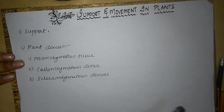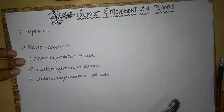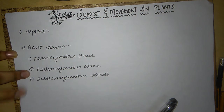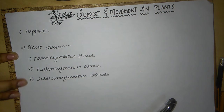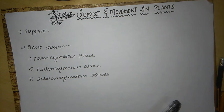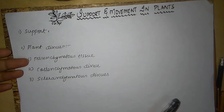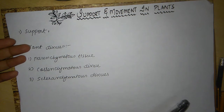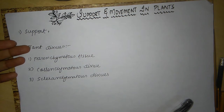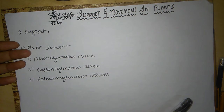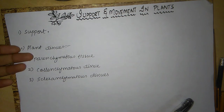We have three types of plant tissue: parenchymatous tissue, collenchyma, and sclerenchyma. Parenchyma — these are permanent plant cells with a thin primary cell wall but no secondary wall.